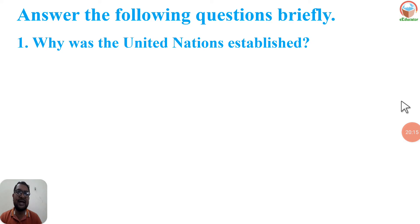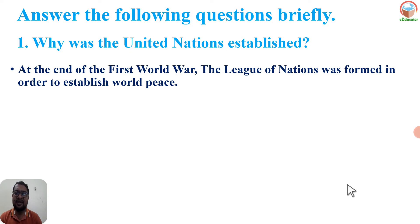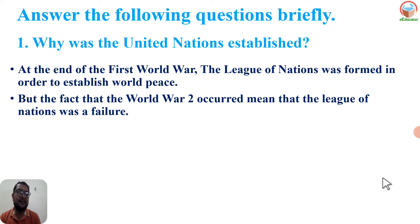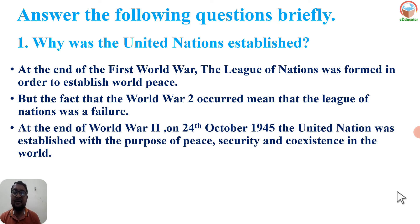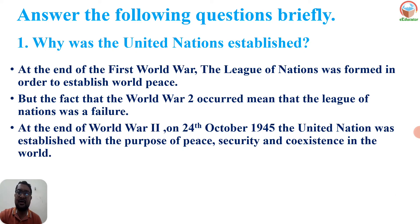Why was the United Nations established? At the end of World War I, the League of Nations was founded to establish world peace, but it failed as World War II still occurred. At the end of World War II, on 24 October 1945, the United Nations was established with the purpose of maintaining peace, security, and coexistence in the world. Its headquarters is in New York.